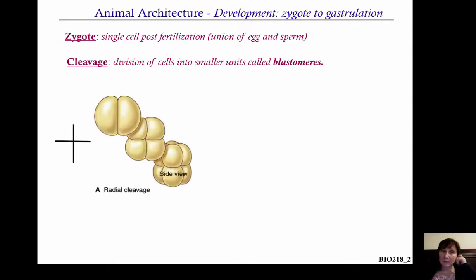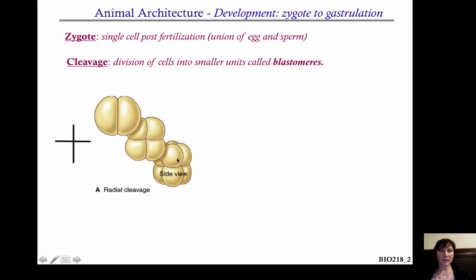There are two different types of cleavage. You can have what's indicated here, which is called radial cleavage. As you can see, you have the two-cell stage, four cells, and then eight cells. What's key here is to notice that the four cells on top are directly over and symmetrical to the cells on the bottom.